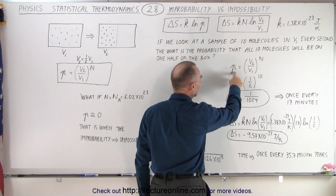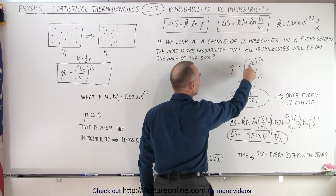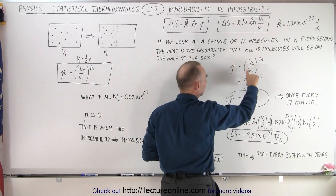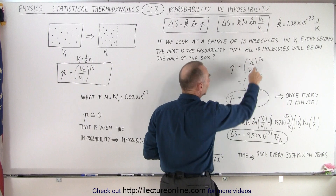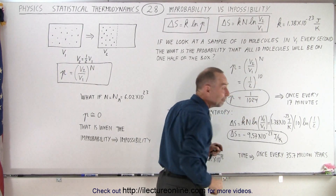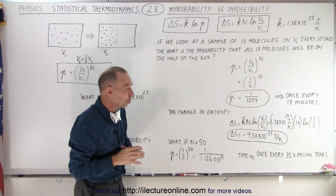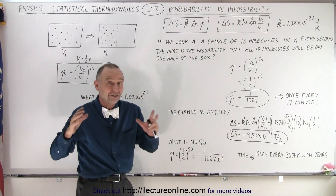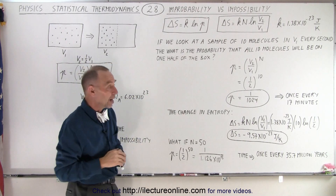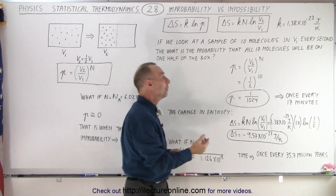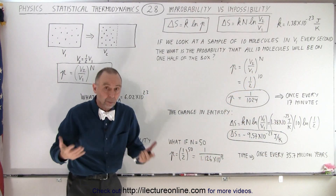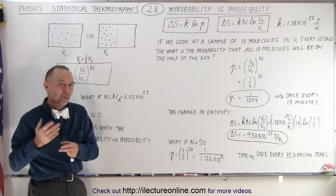So we see that the probability of that occurring is equal to v2 over v1. In this case, v2 will be half of v1, so we replace that ratio by one half, and n would be 10. You can see that the probability is 1 every 1024 looks. So about once every 1,000 times that we look, we will see all 10 molecules in one half of the box. That will happen about once every 17 minutes.